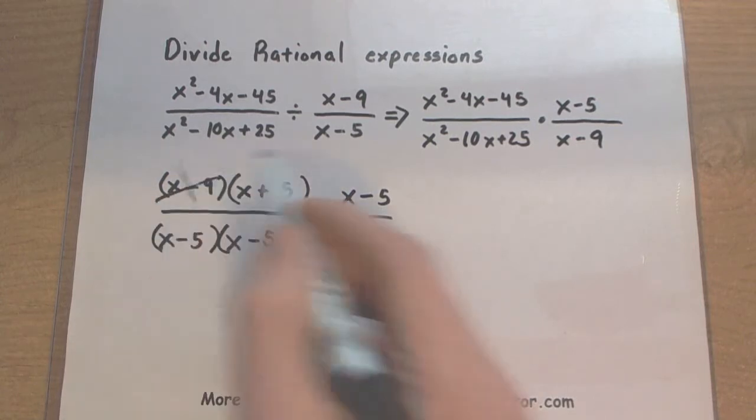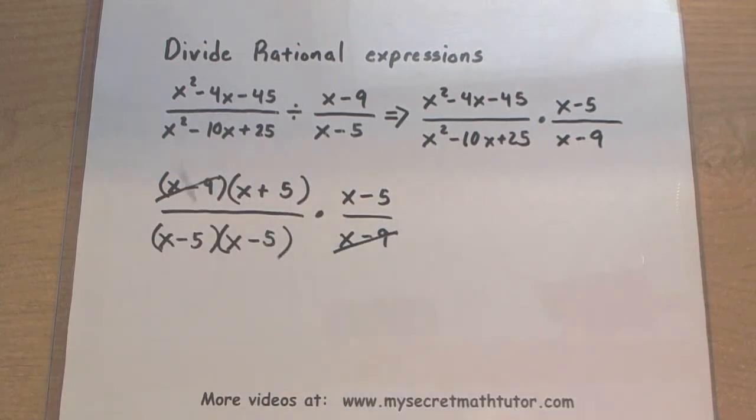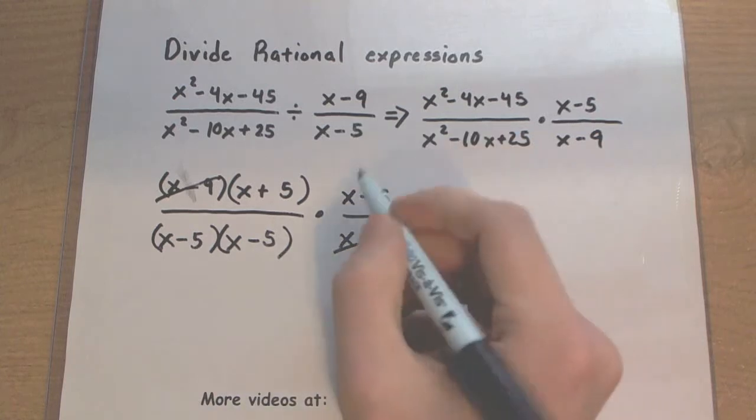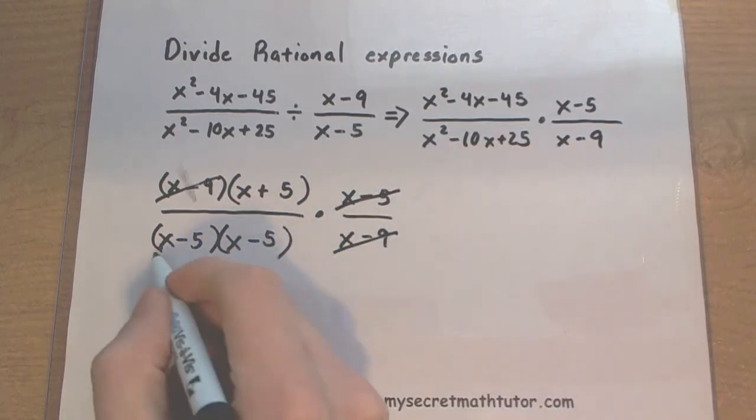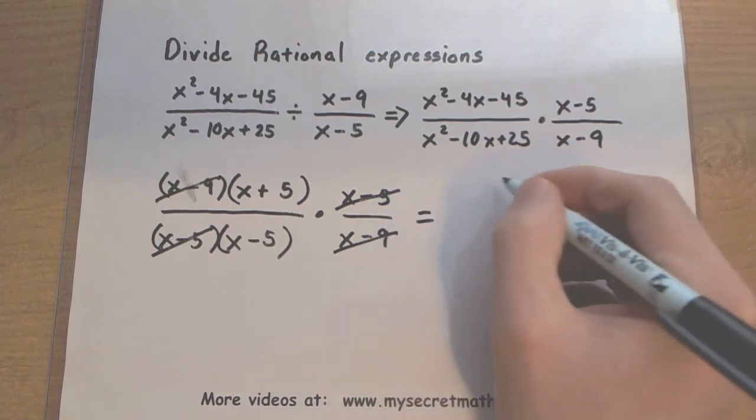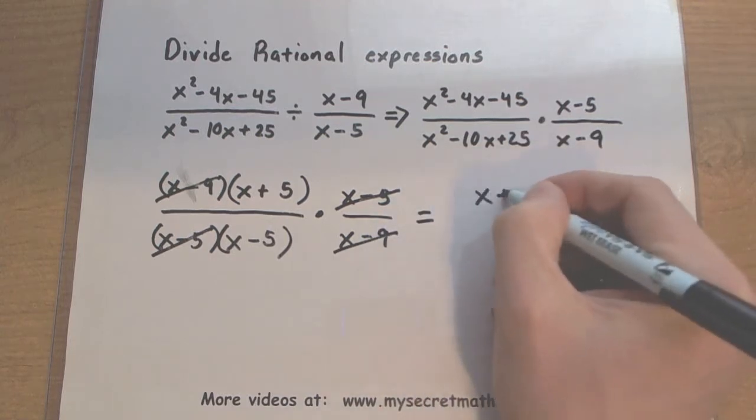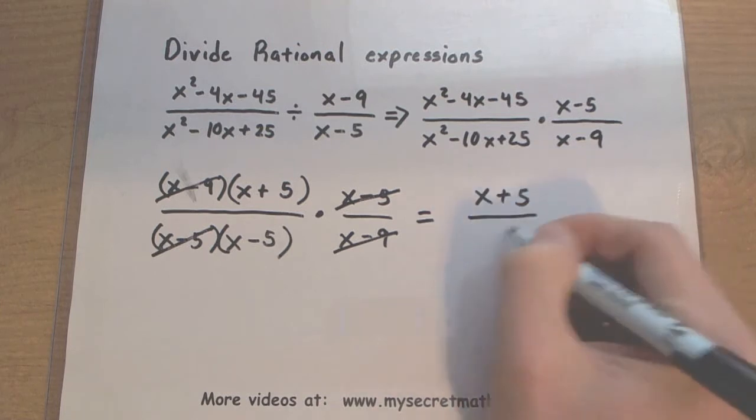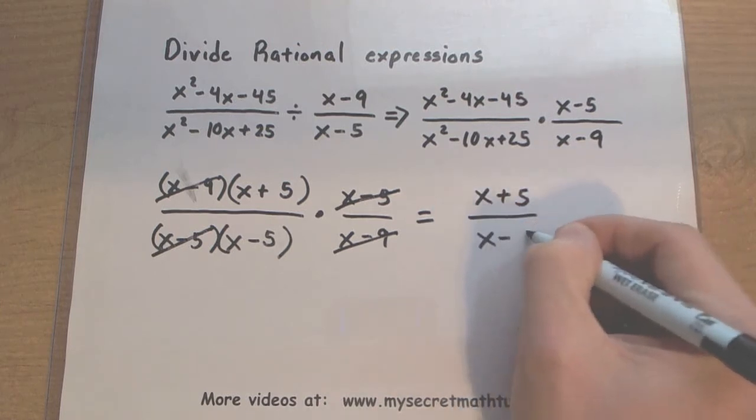We have this x minus 9. I'll cancel with the x minus 9. An x minus 5, canceling with an x minus 5. And after doing so, the only thing left in the top is x plus 5, and the only thing left in the bottom is x minus 5.